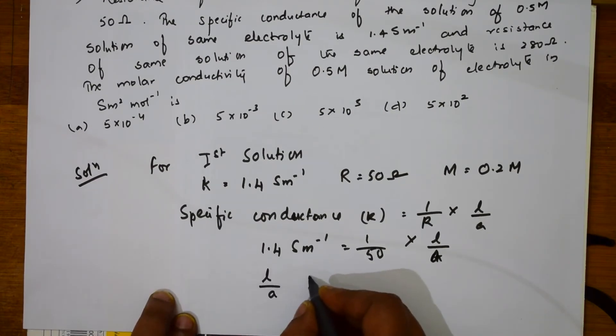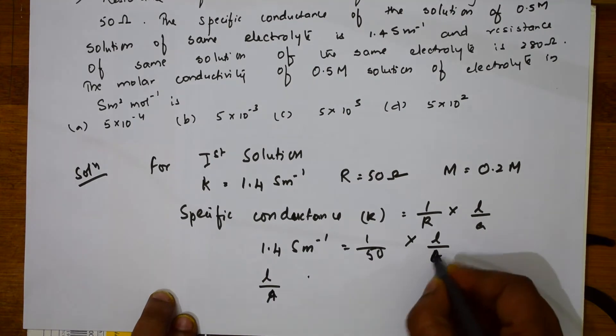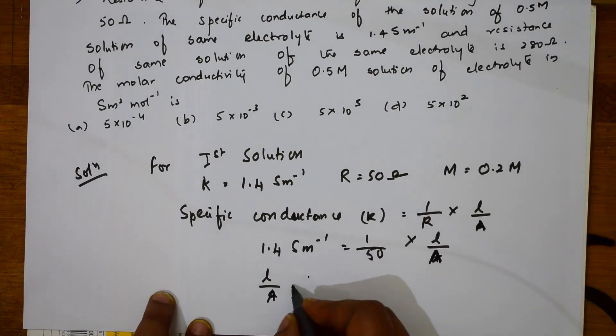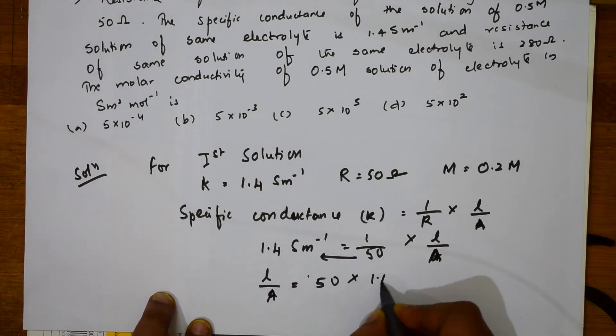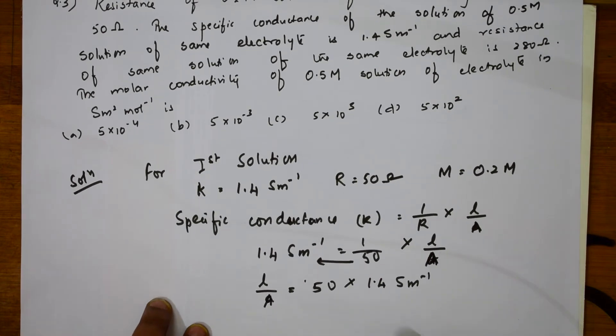So, L by A is equal to, area of cross section L by A is equal to 50 times 1.4 S/m. First one I got.